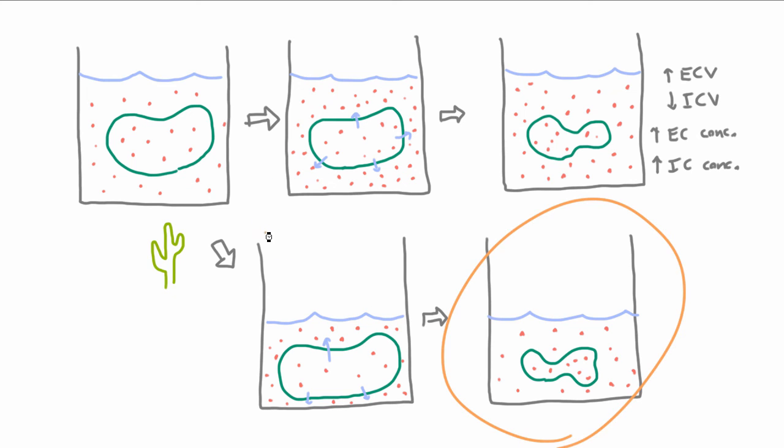we see that we have actually lost extracellular volume, lost intracellular volume, but we've gained extracellular concentration and gained intracellular concentration. So I'm saying these are similar because in both cases you have a shift of water out of the cells. But the difference is that here initially you lost a bunch of volume through water, which is why the volume of both went down.